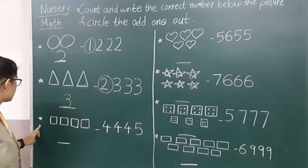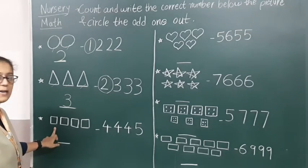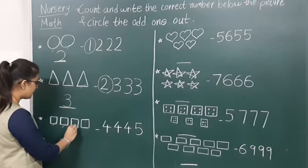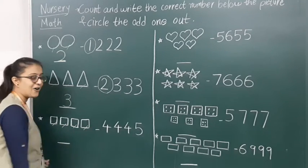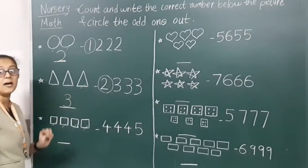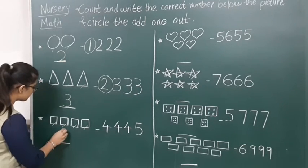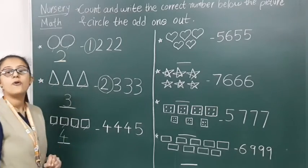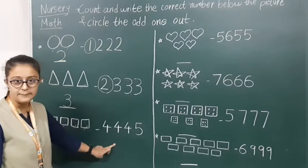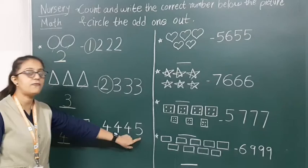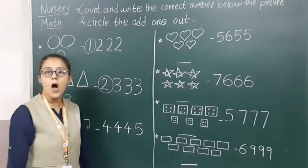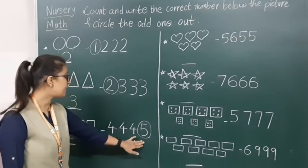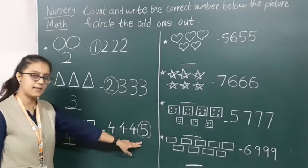Now moving to the next picture. Which shape is this? Square, right? How many squares do we have? Count with me: one, two, three, four — four squares. So we have to write here number 4. How to write number 4? One slanting line, one sleeping line, and one more standing line. Number 4. Now we have to find the odd number. Number 4 is the same, but there is a number 5 — so number 5 is the odd number and we have to do circle on number 5.